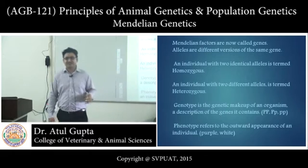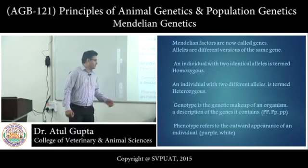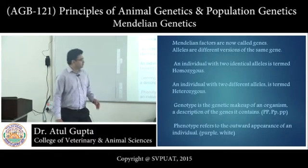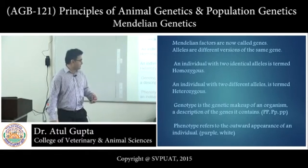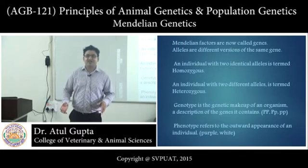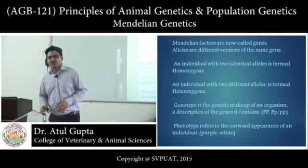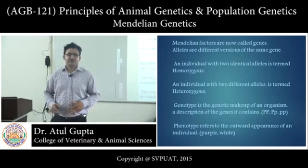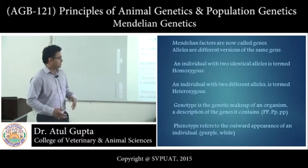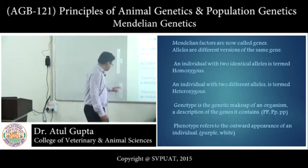Genotype is the genetic makeup of an organism — a description of the genes and alleles it contains. Phenotype refers to the outward appearance of an individual; that is, the external appearance of any individual is what we call phenotype.